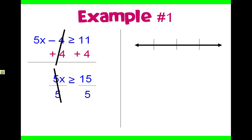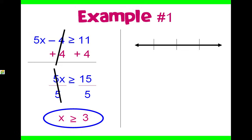Opposites will cancel out, leaving us with x. We did not multiply or divide by a negative, so we bring down our inequality sign. And 15 divided by 5 is 3. We have found our answer: x is greater than or equal to 3.